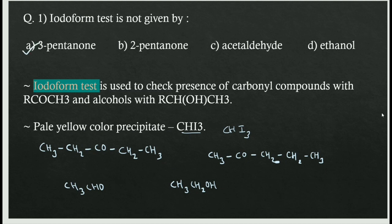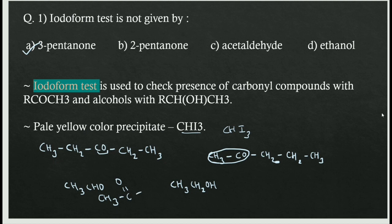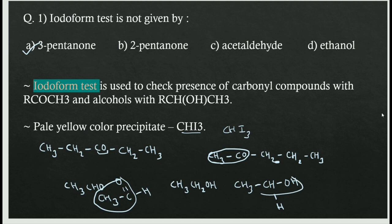The answer is A, 3-pentanone. In 3-pentanone (CH3-CH2-CO-CH2-CH3), the CO group is present but there is no CH3 directly next to it on the required side. In 2-pentanone, CO is adjacent to CH3. In acetaldehyde, CH3-CHO also has CO next to CH3. Ethanol (CH3-CH2-OH) is the only primary alcohol that gives the iodoform test, with a CHOH group, so it gives a positive result. But 3-pentanone does not give the iodoform test, so the answer is A.